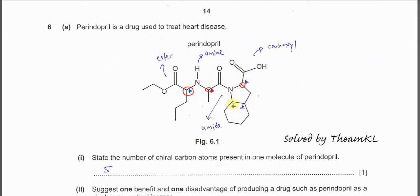This one is also another chiral carbon: one group, two group, three group, another H. This one also the same: one group, two group, three group, and another H.